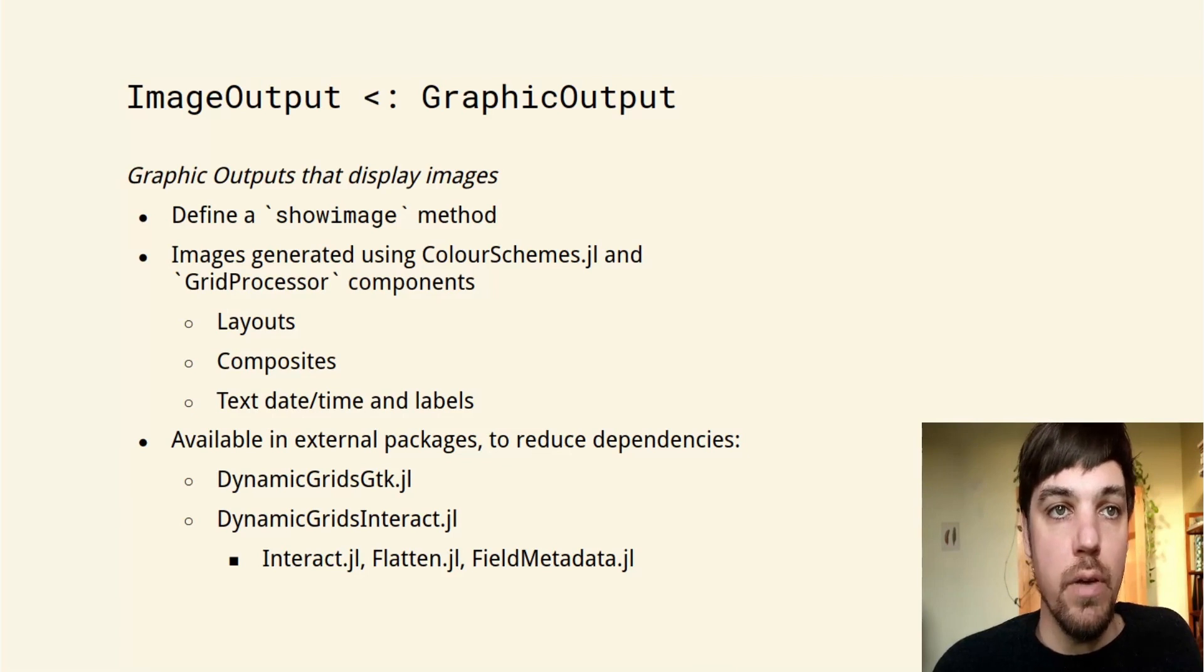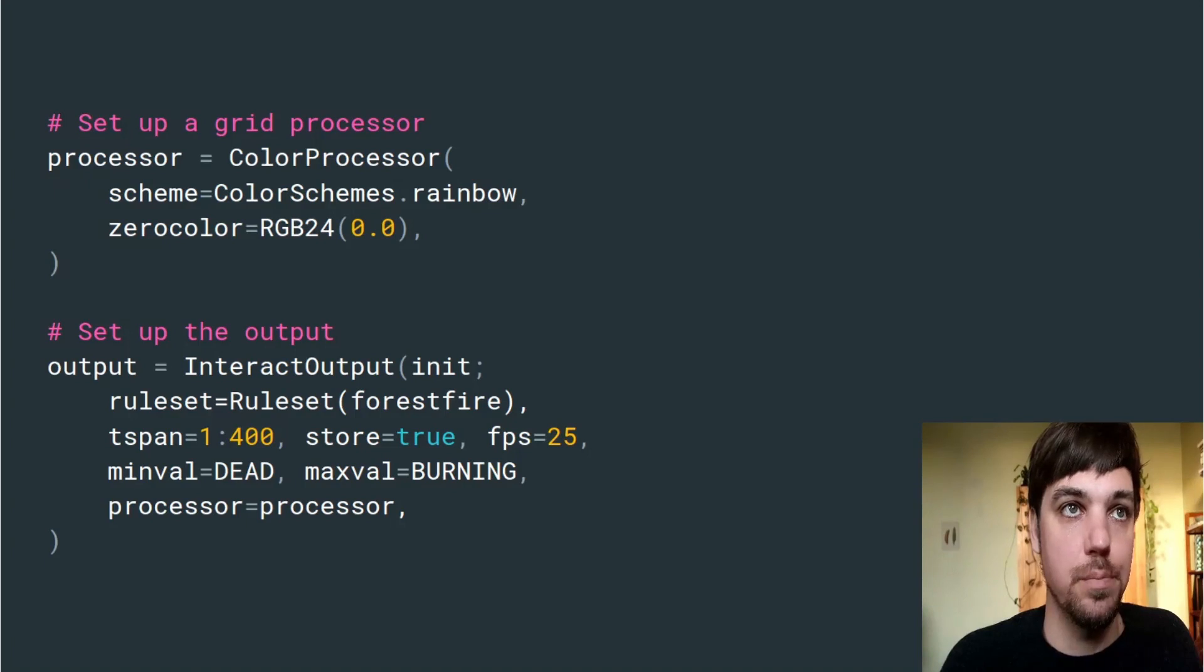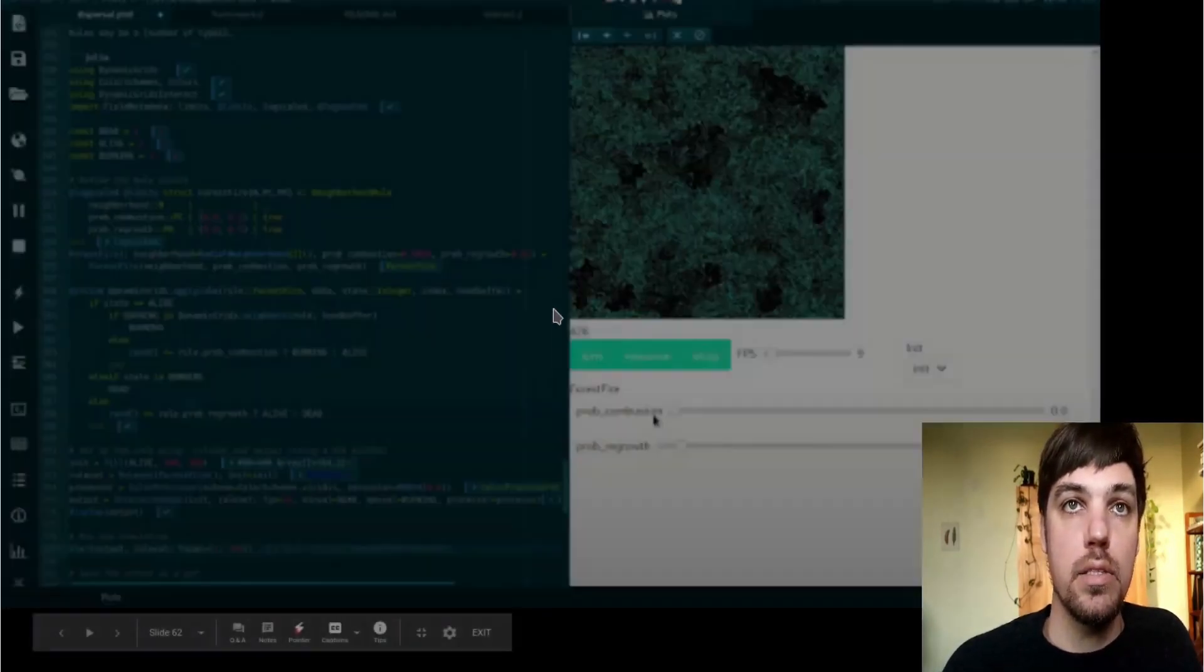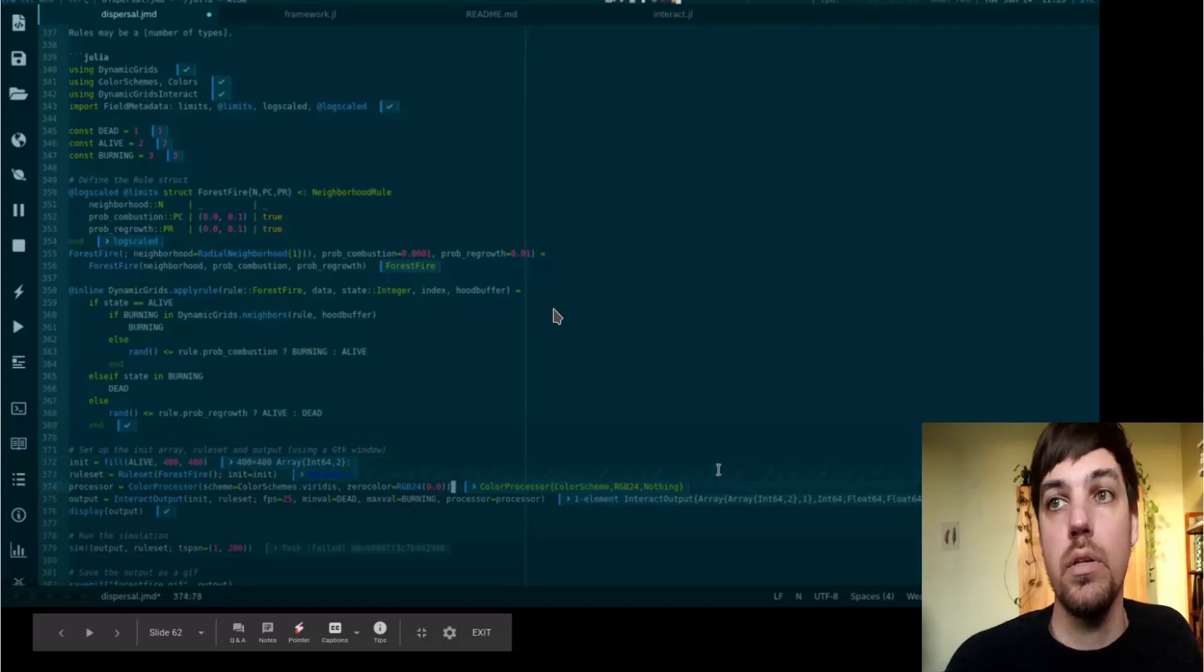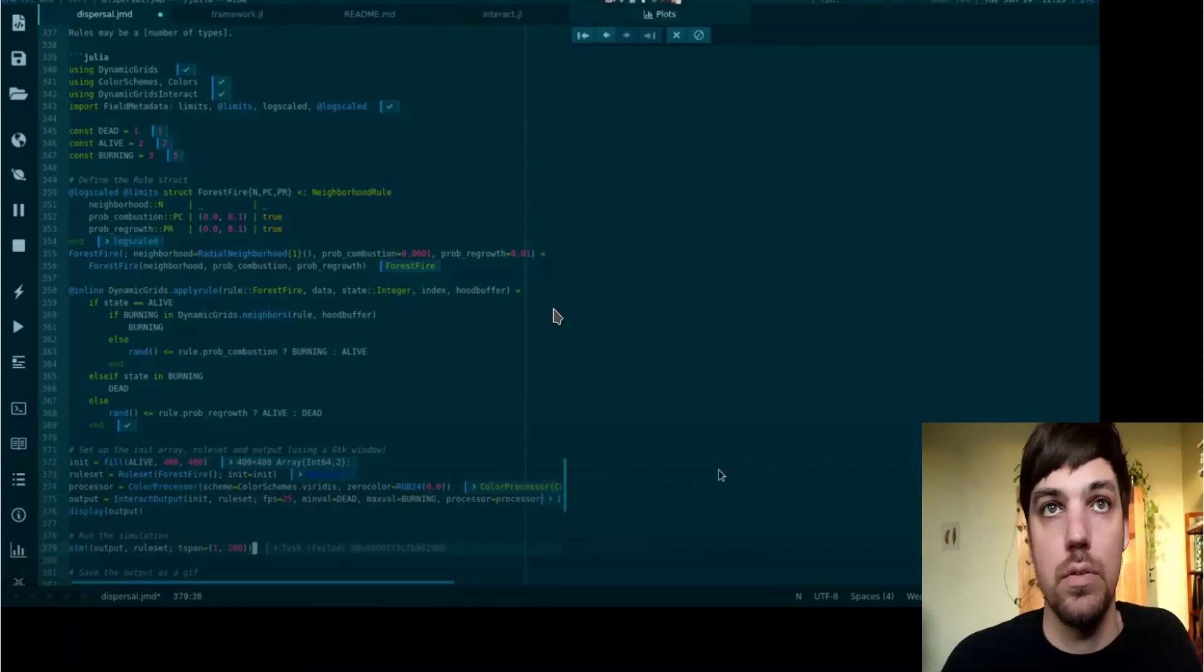Dynamic grids interact builds on interact.jl and flatten.jl and field metadata.jl to automatically produce interactive interfaces for any arbitrary model. We can define a color processor to visualize the model using the rainbow color scheme, then set up the interact output passing in the model. Then we can run that inside the atom interface, but you can also run it in a web interface or electron.